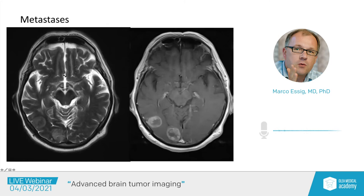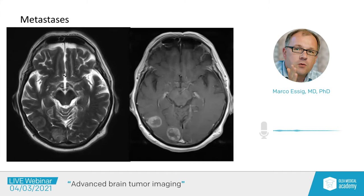Cellular areas like tumor infiltration show more diffusion restriction because there is less space between cells for water to move freely. Areas of vasogenic edema show higher ADC values because water molecules are not restricted by high cellularity. This can be used in stroke imaging but is also helpful in assessing brain lesions, since high cellular density often reflects a high-grade or aggressive tumor, such as lymphomas or some metastases, aiding differential diagnosis and treatment planning.